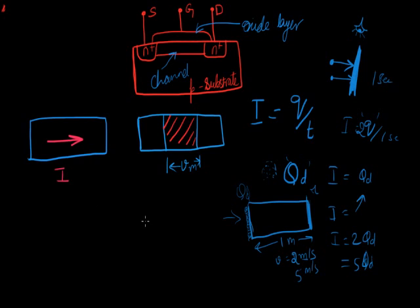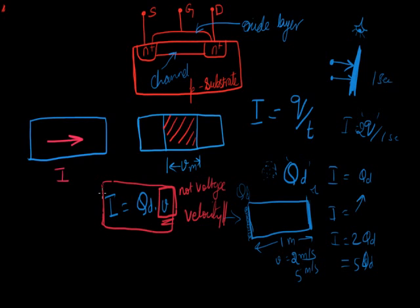That means the equation of current can be boldly written as Qd times the velocity in meters per second. Remember, this V here, let me highlight it, this V here is not the voltage. It is the velocity. Don't forget that. So this is the general equation for current flowing in a MOSFET.